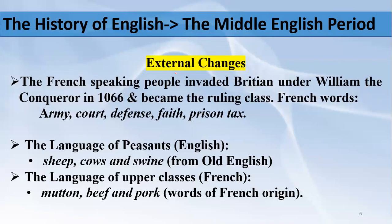The very first external factor is the French influence. When French-speaking people invaded Great Britain as conquerors — with King William around 1066 — they came to Great Britain speaking the French language. When they came into contact with the English people, they contributed to the English language. Keep in mind that they invaded Great Britain, so they were the people of government and of court.